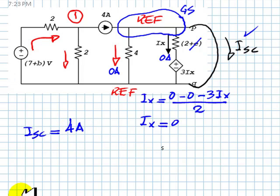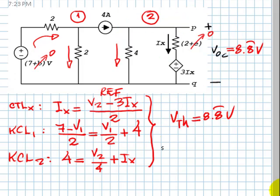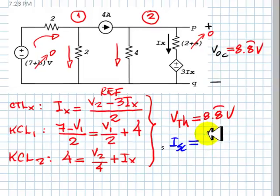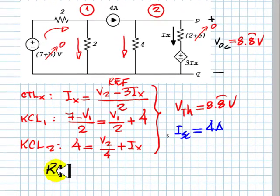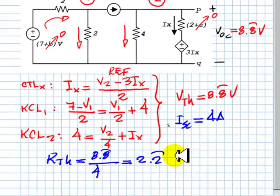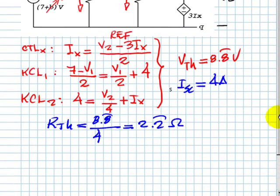We are ready. Let's go back and say the short circuit current is 4 amps. That means that RTH is VTH divided by the short circuit current 4 amps. That is 2.2 periodic ohms.